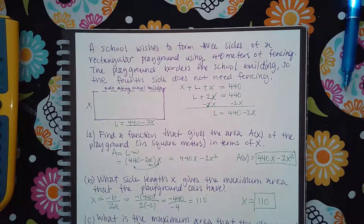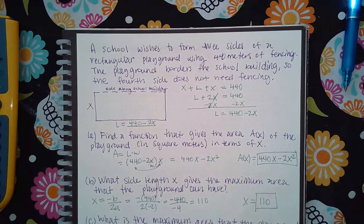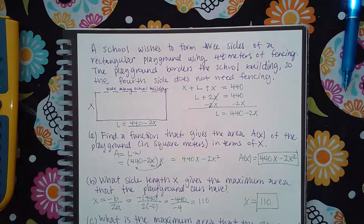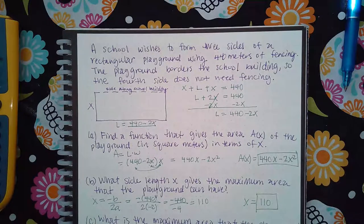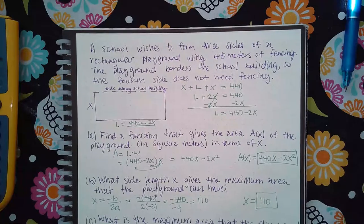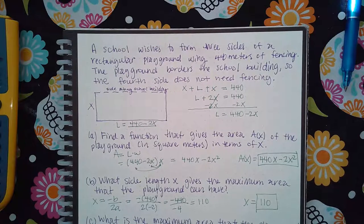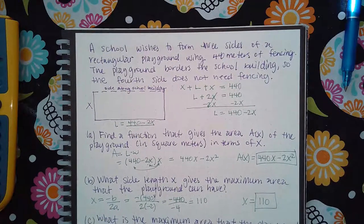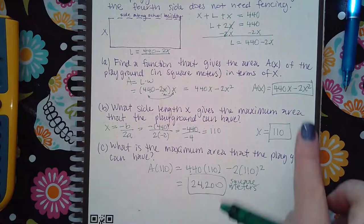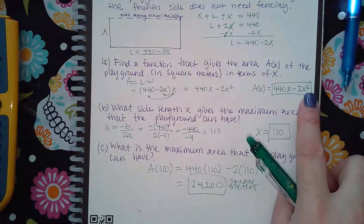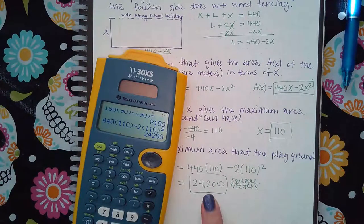Plugging x = 110 into the area formula: 440(110) − 2(110)² = 24,200 square meters. That is the maximum area for the school playground.